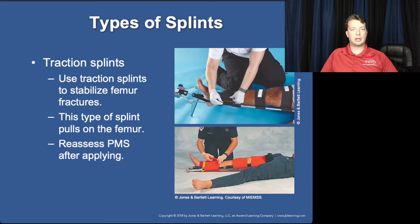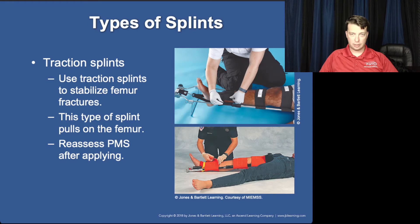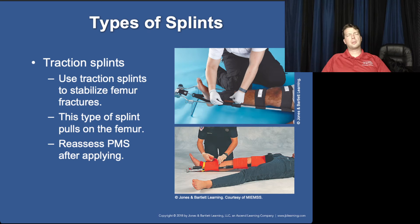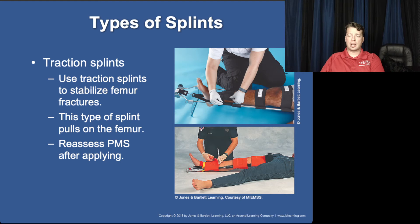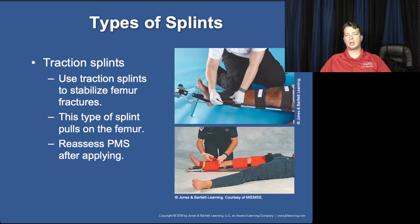Traction splints are a very useful tool, probably underutilized. There are a couple of different methods — the Hare traction splint and another form is a single rod device called the Kendrick Traction Device, or KTD. It has one collapsible rod that runs along the inside of the femur — it's not as strong as the Hare traction splint, but it can be as effective and is far less bulky. What do we use a traction splint for? These are for mid-shaft femur fractures.